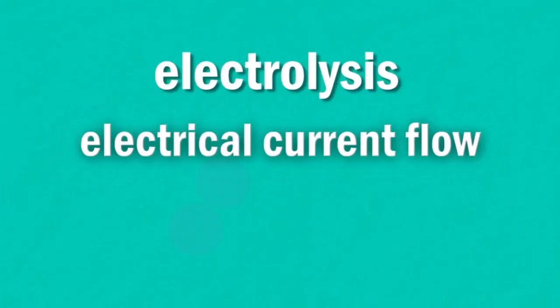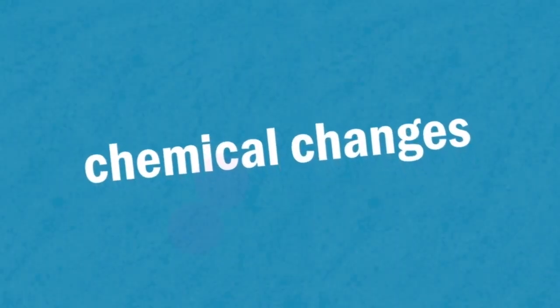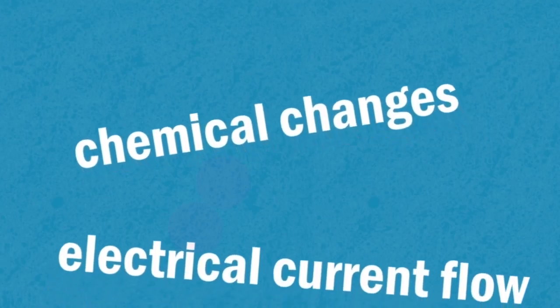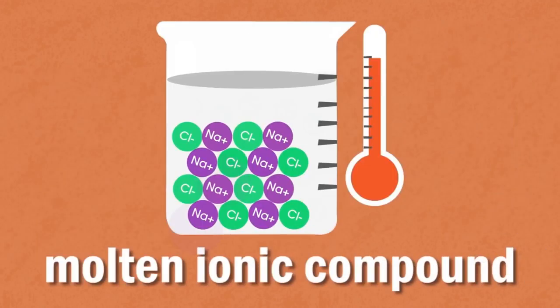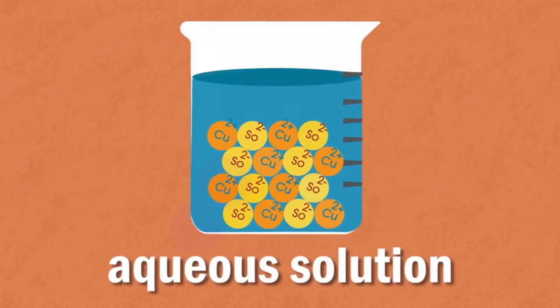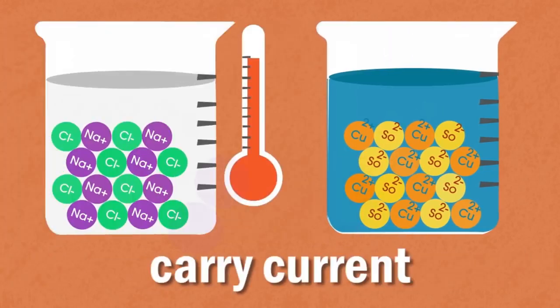Electrolysis is electrical current flow through a liquid which causes chemical changes. Yes, you did hear that correctly. Current flowing through a liquid. Now, not all liquids can conduct. The liquid can be a molten ionic compound or an aqueous solution. In either case, it must be able to carry current.